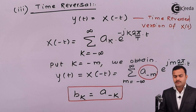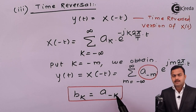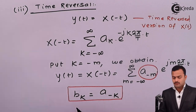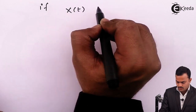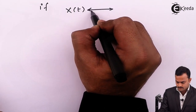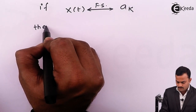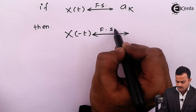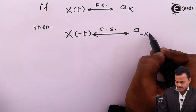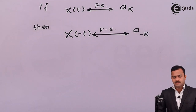This is nothing but a Fourier series representation of the signal where the Fourier series coefficient will be a minus k. So whenever we do a time reversal of a signal, the new coefficient bk is nothing but a minus k. So if x of t through a Fourier series gives ak as the Fourier series coefficient, then x of minus t through a Fourier series will give a minus k. This is the time reversal property. Let's go to the next property: time scaling.